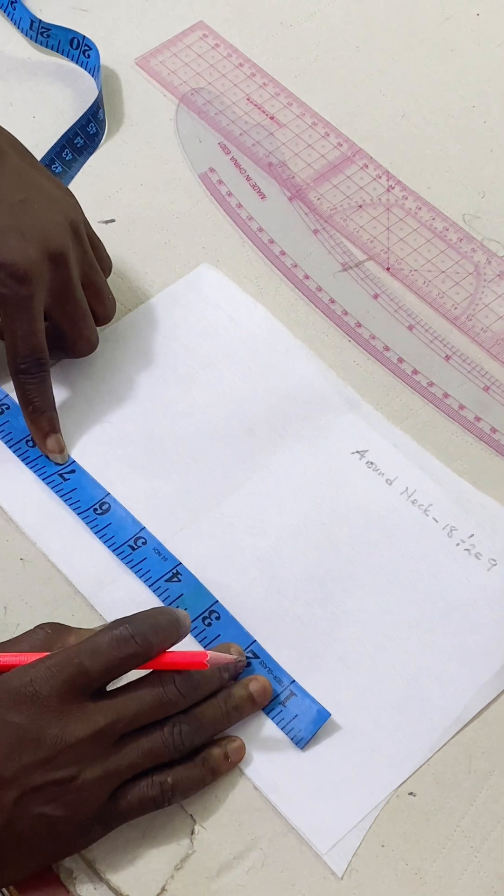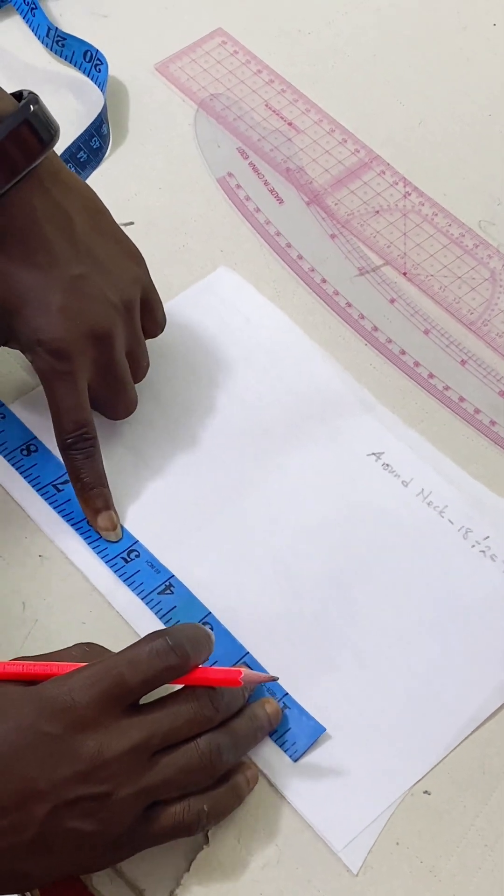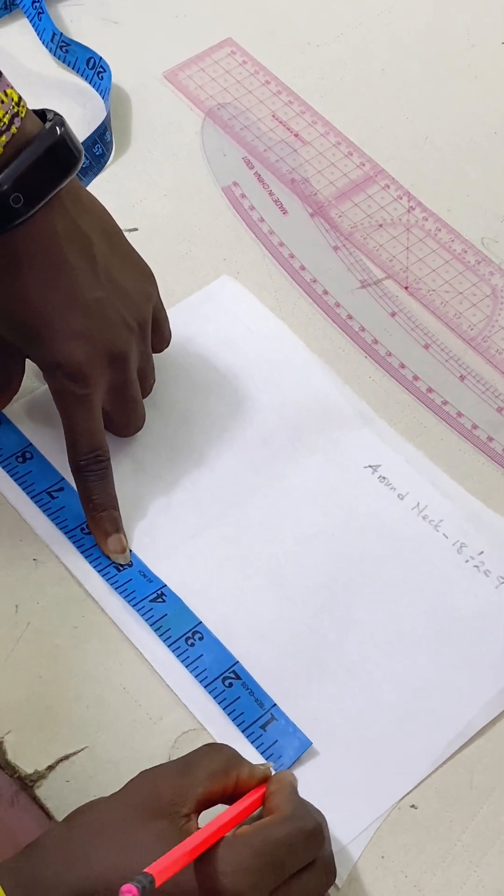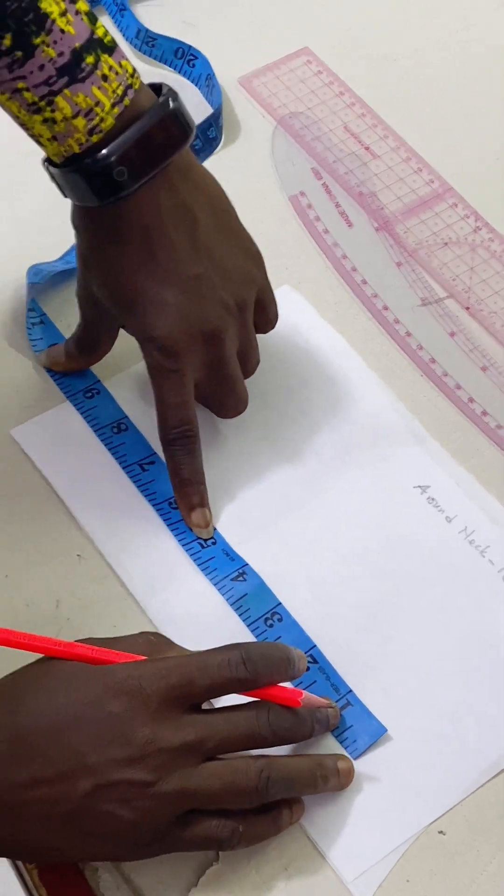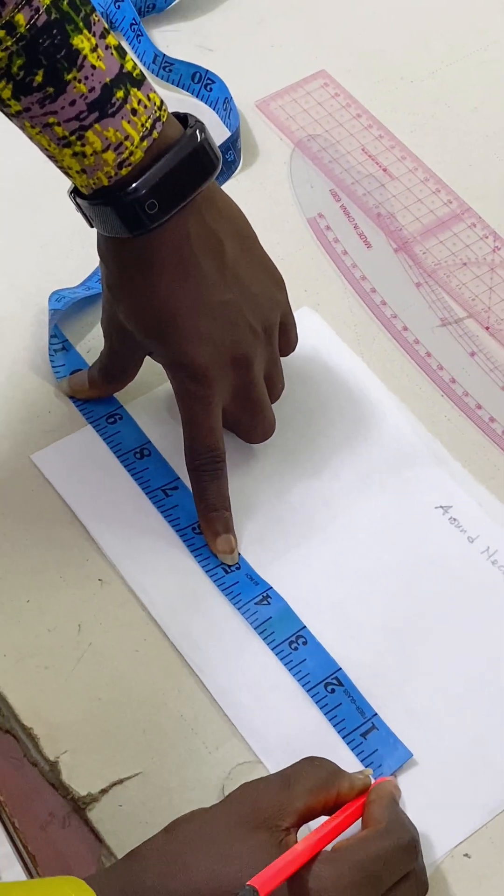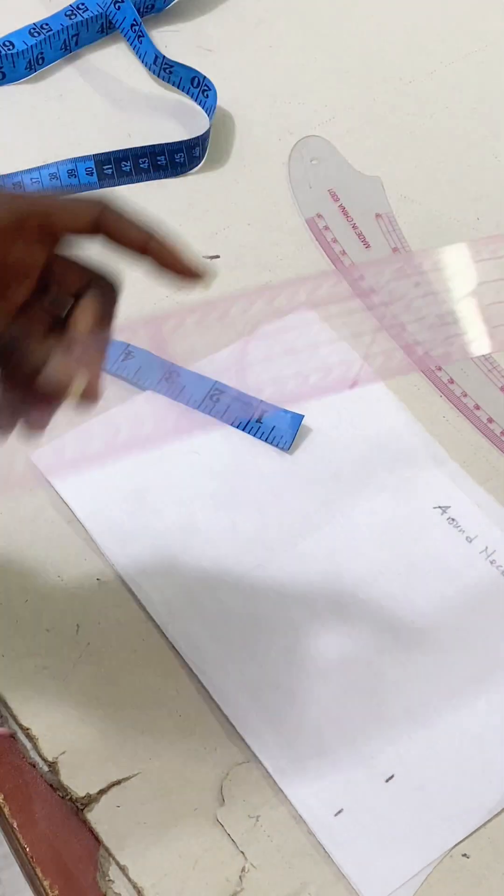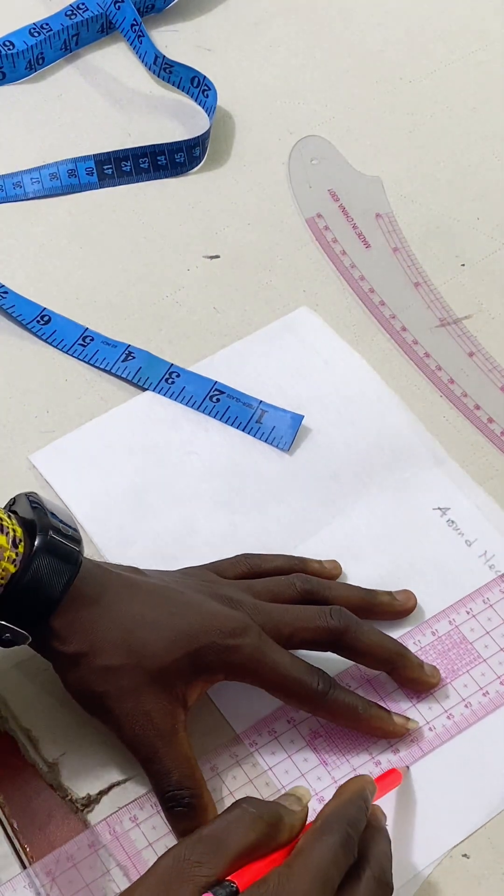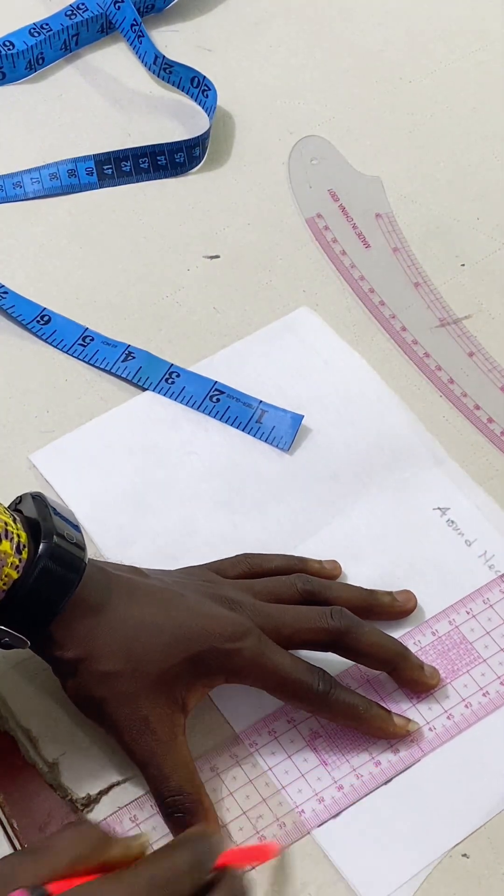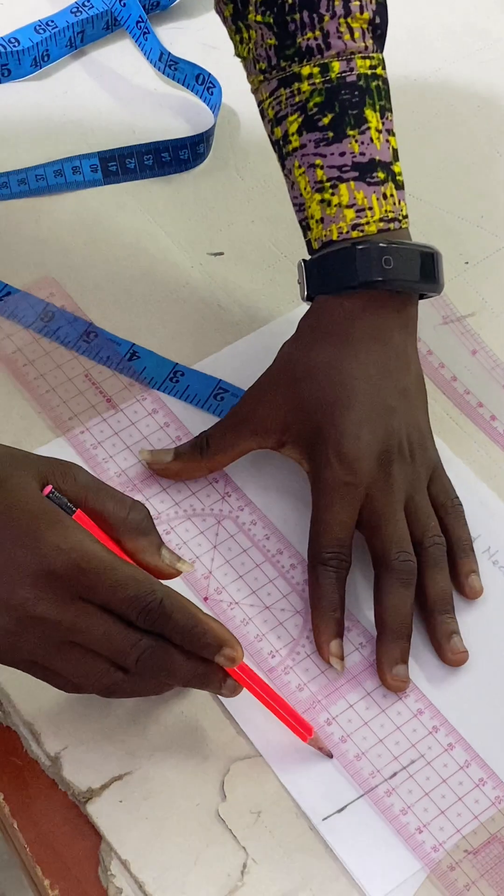So we will now measure our 9 from the folded area, 9 inches, and square it up again 9 inches to get our straight line. So from here, this side is 9 inches.